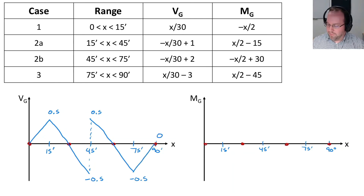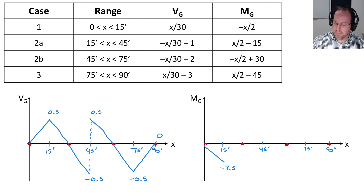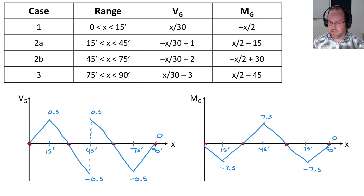Now if I look at the moment equations, it starts as a negative slope and goes to negative 7.5 — evaluating negative X over two at 15 feet gives negative 15 divided by two. Then a positive slope ending at 7.5, followed by a negative slope back to negative 7.5, and then a positive slope taking it back to zero.